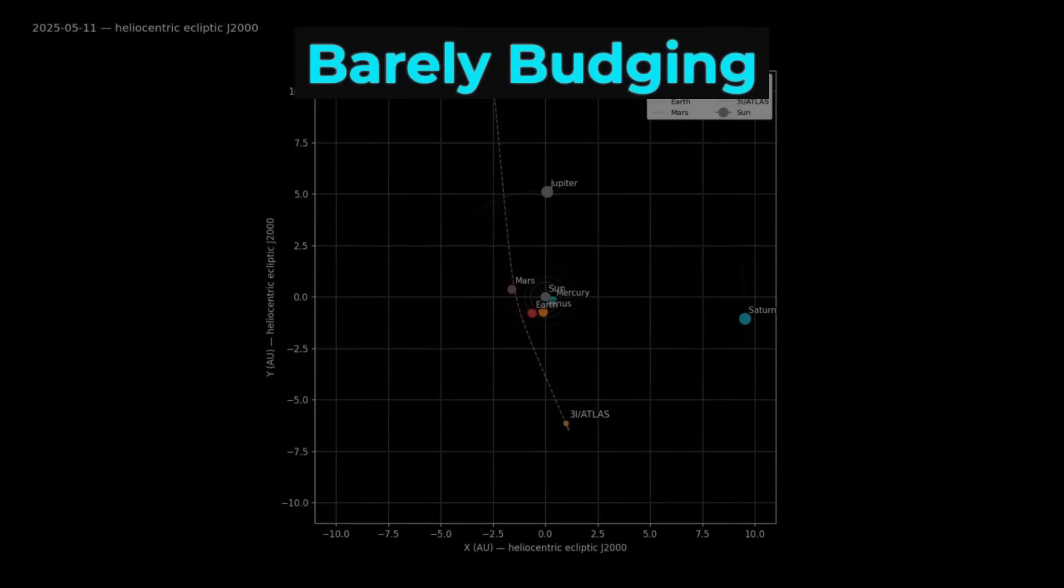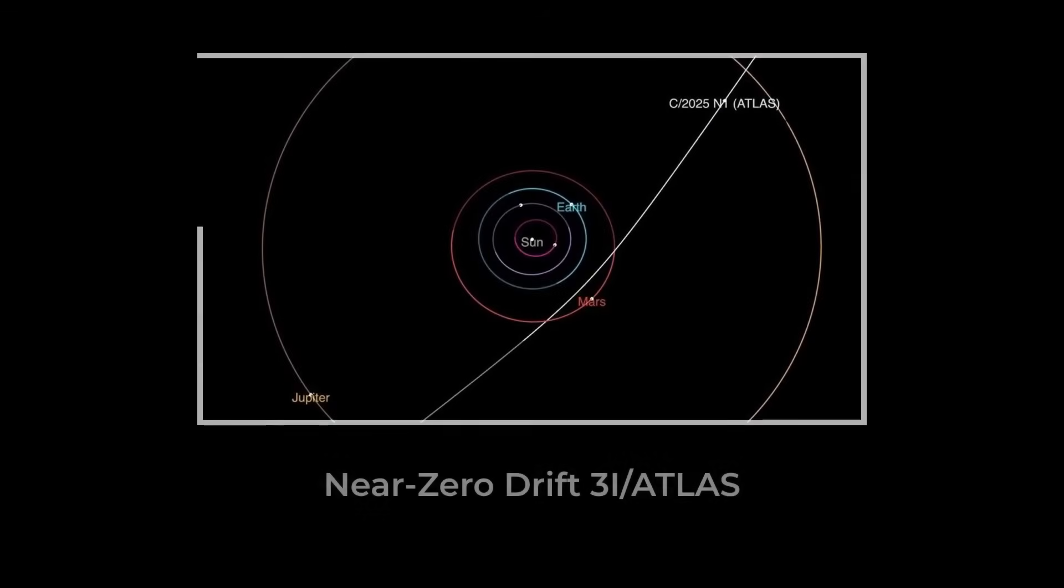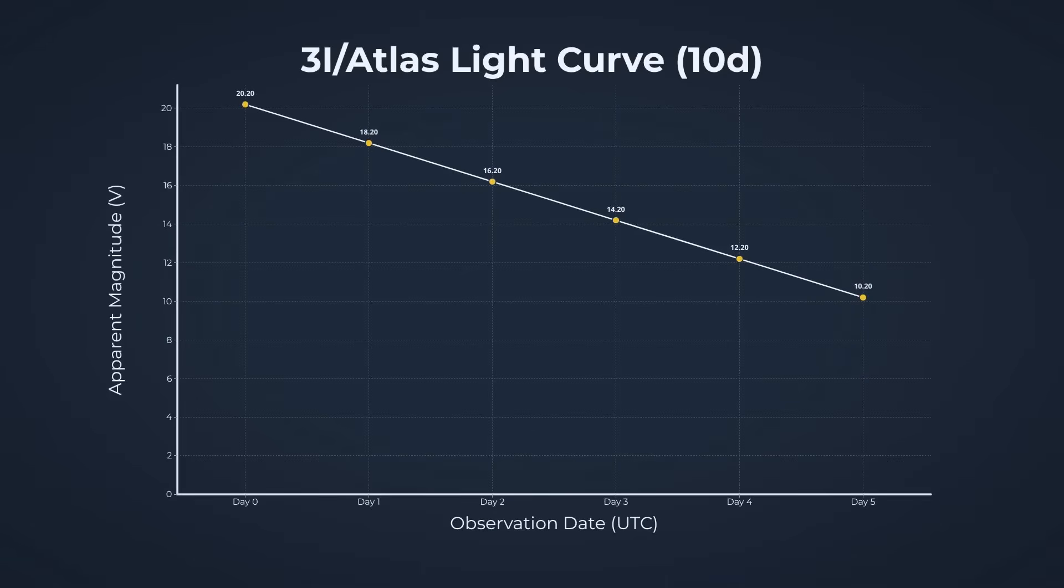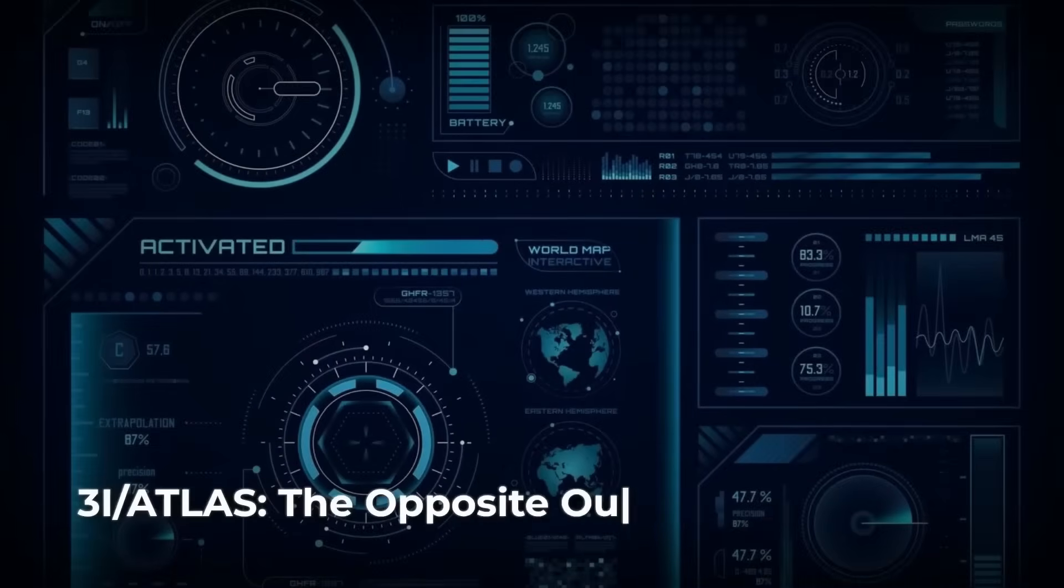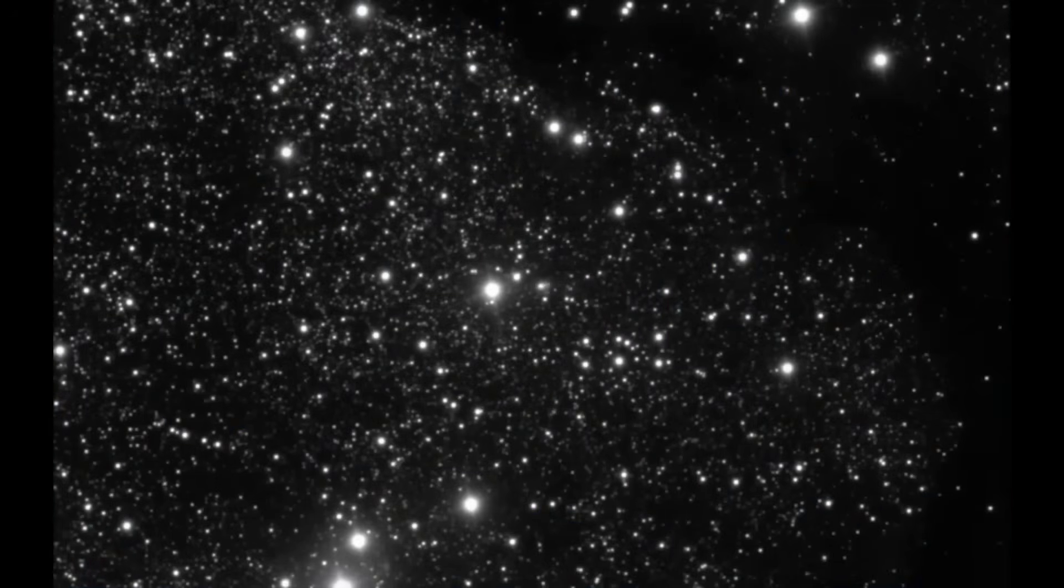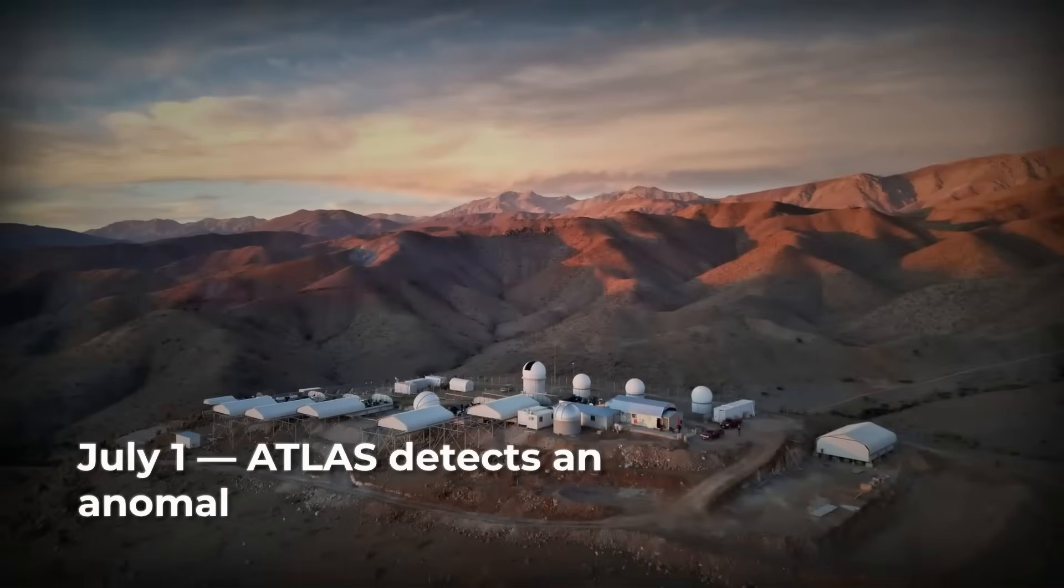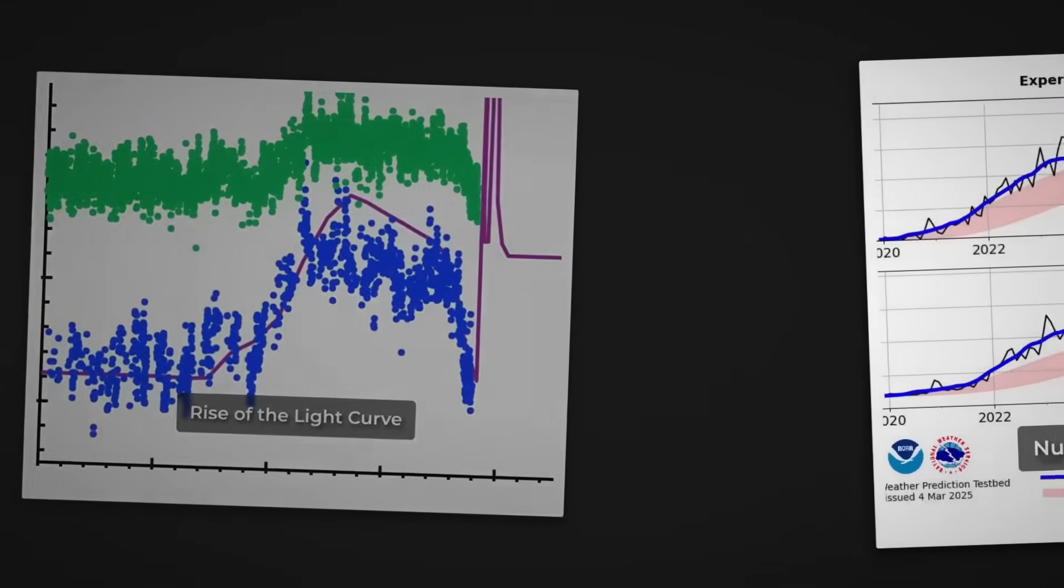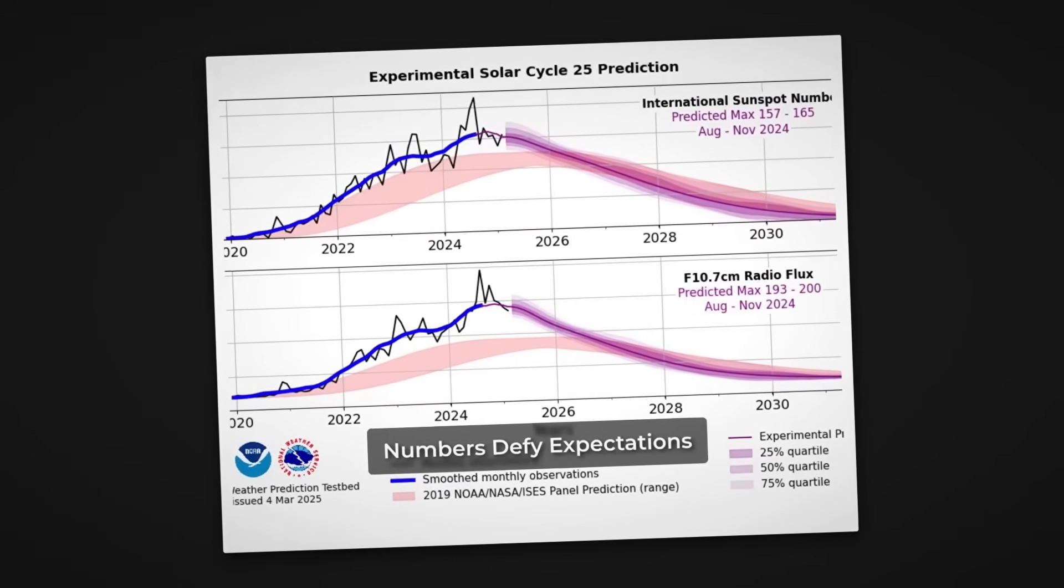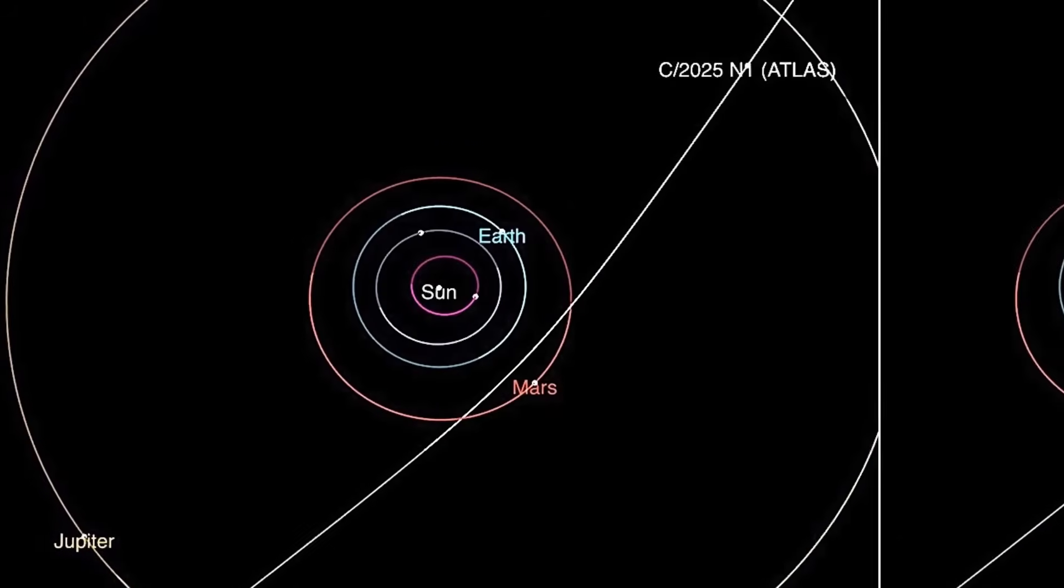If Atlas's motion wasn't strange enough, its chemistry has only deepened the mystery. Using some of the world's most powerful instruments, like the Very Large Telescope in Chile, astronomers turned spectrographs toward its coma, the glowing cloud of gas and dust that surrounds its core. What they found was baffling. Clear, well-resolved lines of nickel appeared in the spectrum, showing that nickel atoms were being released steadily into space. But iron, which should always accompany nickel, was virtually absent.